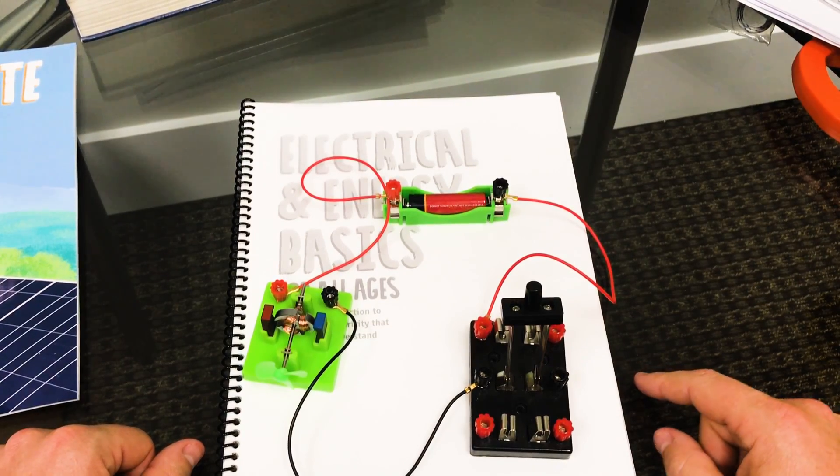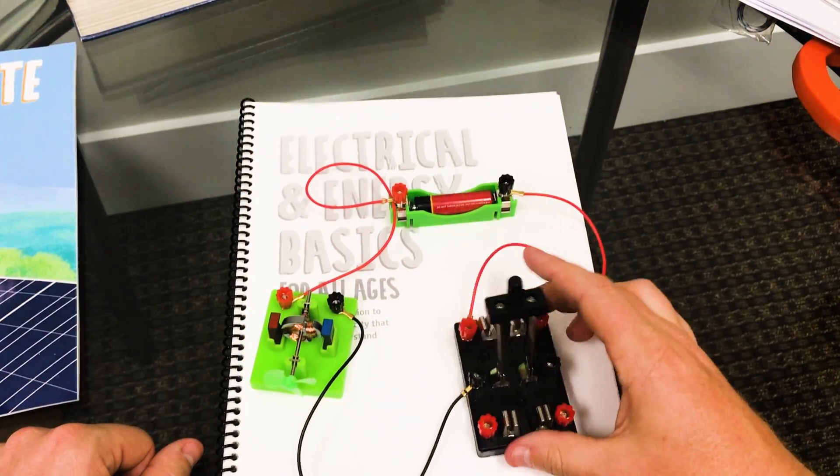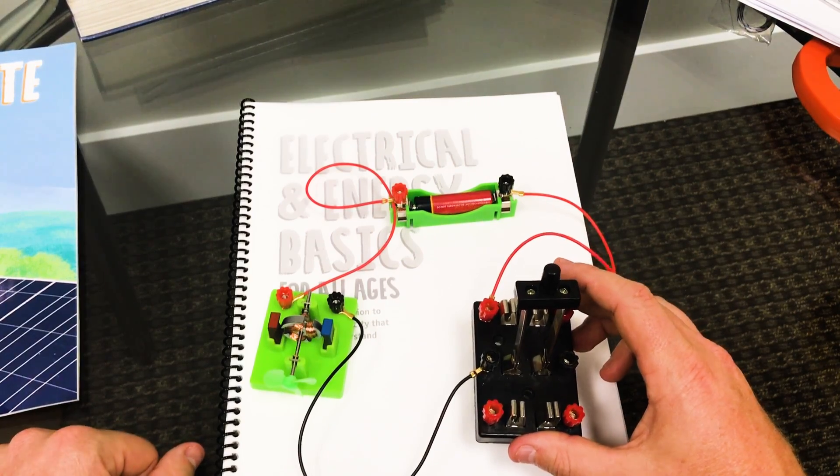So that's it. That is the basic electrical circuit. Power supply, load, switch. Switch turns on and off, re-diverts, passes power.